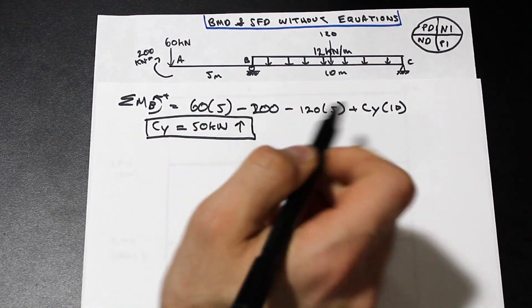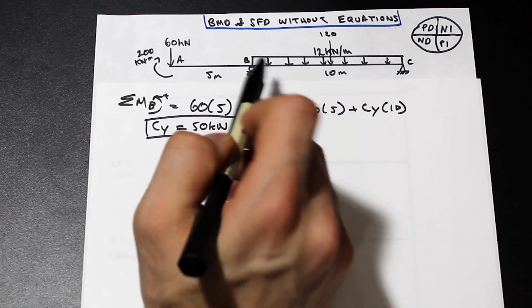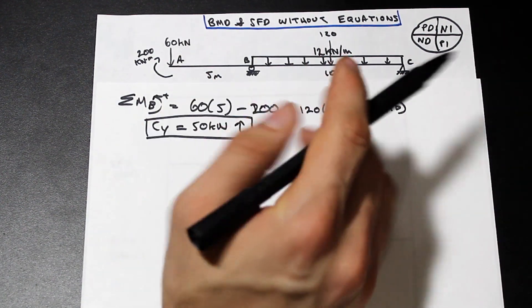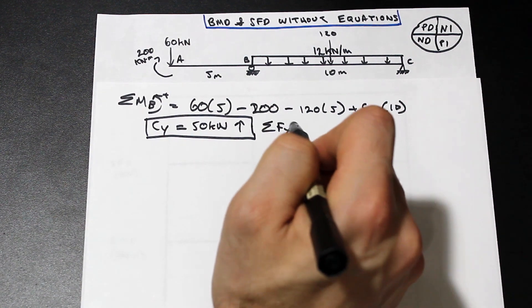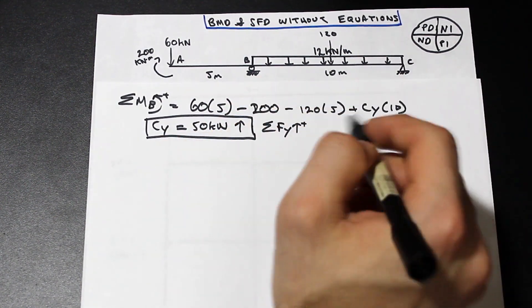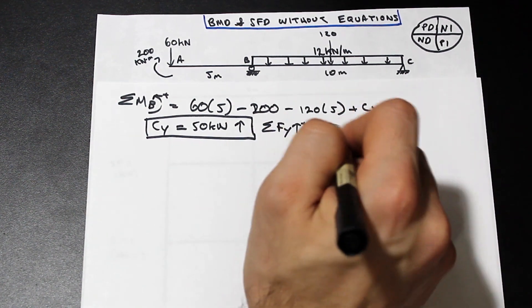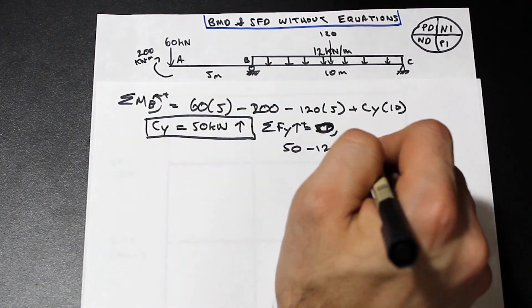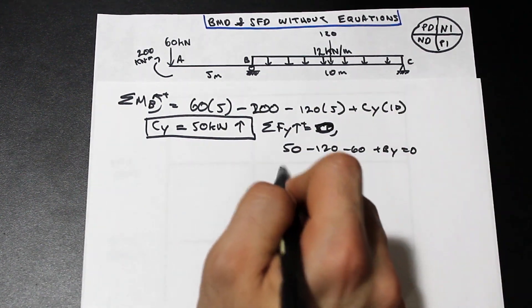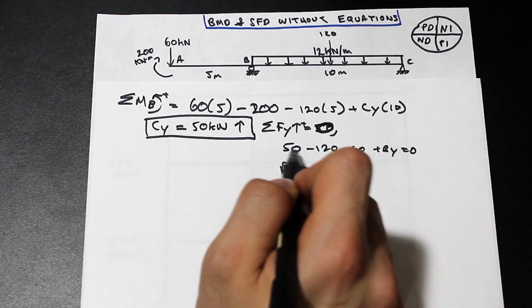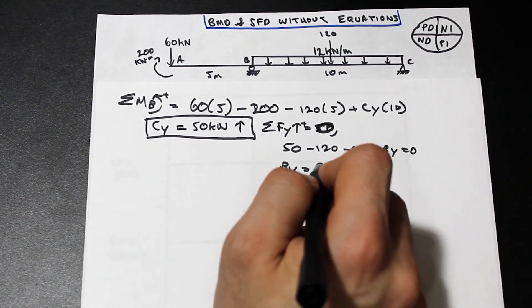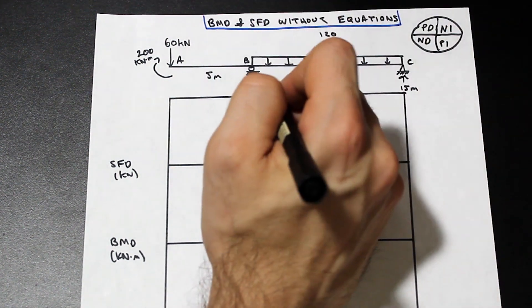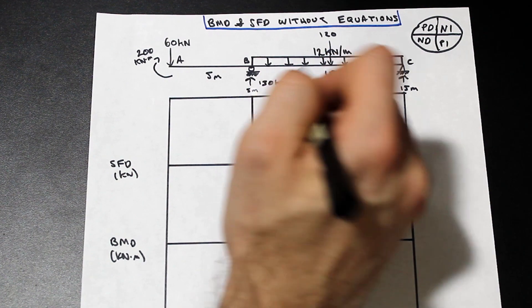Now at this point, if you're doing a test, I would suggest taking the moment at C to find the reaction at B, simply because then you can check that CY and BY add up to the external forces. In this video, to save some time, I'm just going to take the forces in the Y direction. So we have CY, that's 50, and that equals zero. So we have 50 minus 120 minus 60 plus BY. BY is simply negative 120 minus 60 plus 50, moved to the other side — BY is equal to 130 kilonewtons.